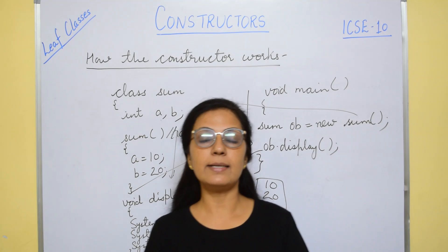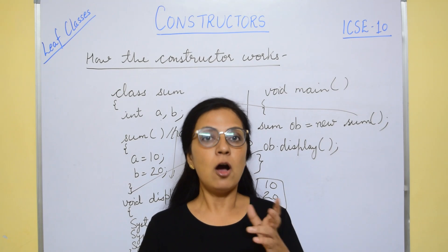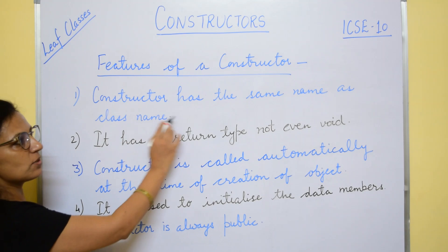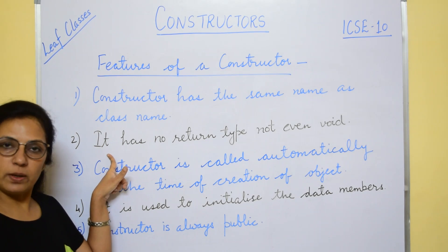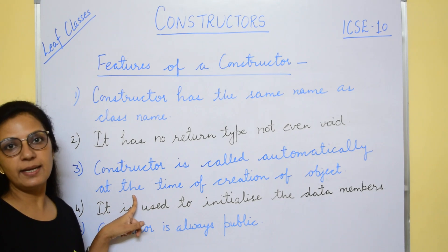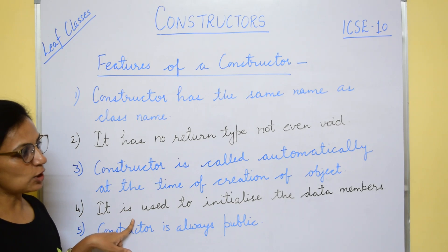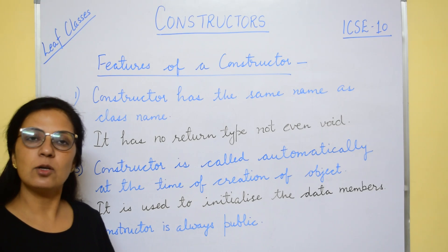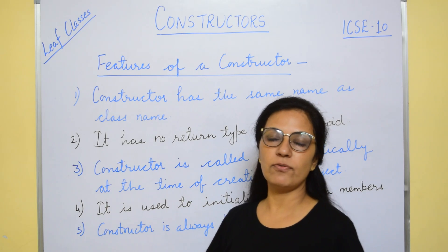We don't have to call the constructor separately — it is automatically called at the time of creation of the object. Now let us look at the features of a constructor: the constructor has the same name as the class name; it has no return type, not even void; it is called automatically at the time of object creation; it is used to initialize the data members; and the constructor is always public. You can take a screenshot of this summary.